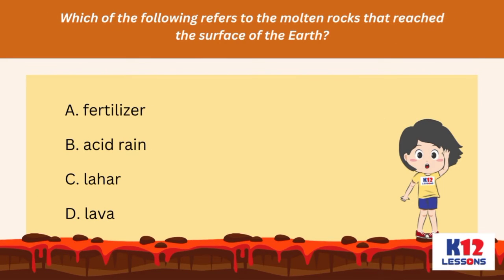Which of the following refers to the molten rocks that reach the surface of the earth? A. Fertilizer. B. Acid rain. C. Lahar. D. Lava.